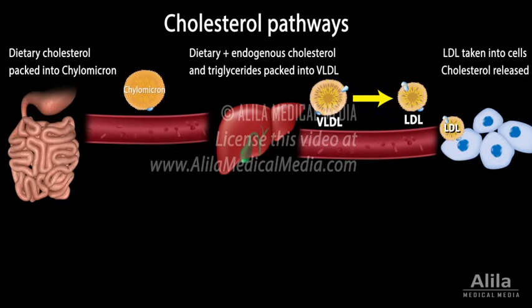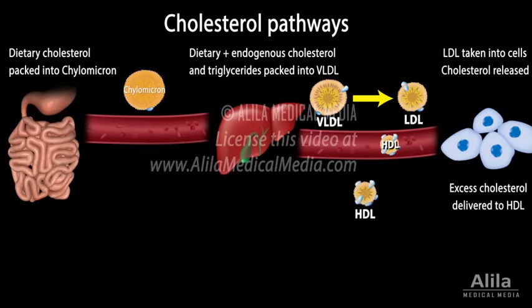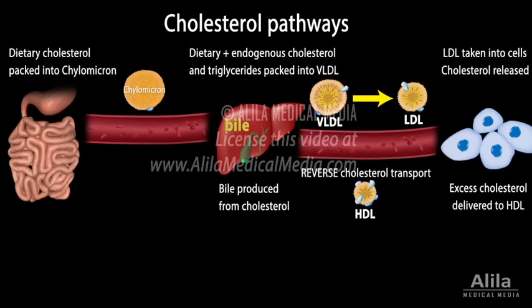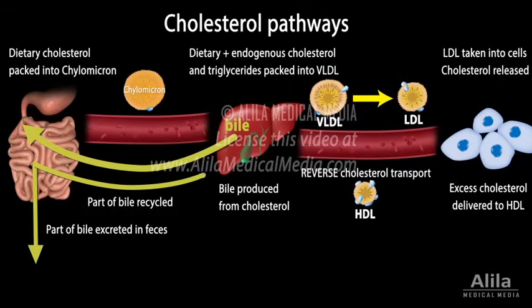Peripheral cells take up LDL by endocytosis using LDL receptors. Cholesterol is used in the cell membrane and other functions. Excess cholesterol is exported from the cells and delivered to high-density lipoprotein, HDL, to be returned to the liver in a process called reverse cholesterol transport. The liver uses cholesterol to produce bile. Bile is secreted to the intestine, where it helps break down fats. Part of this bile is excreted in feces, and the rest is recycled back to the liver.